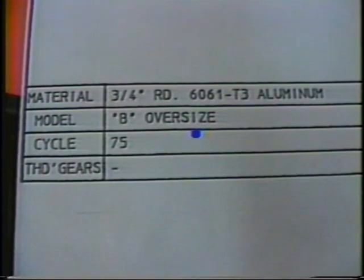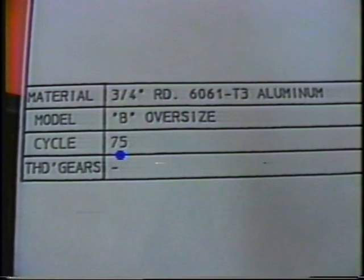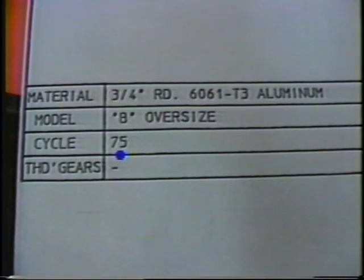Machine cycle will be identified by either 45, 60, or 75. This indicates the maximum number of cycles the machine can make in one minute and is generally most pertinent to the index time. For example, a 45 cycle machine index is 7 tenths of a second, 60 cycle is 5 tenths, and 75 cycle is 4 tenths. Machine cycle is further explained in Tape 4 of this program.